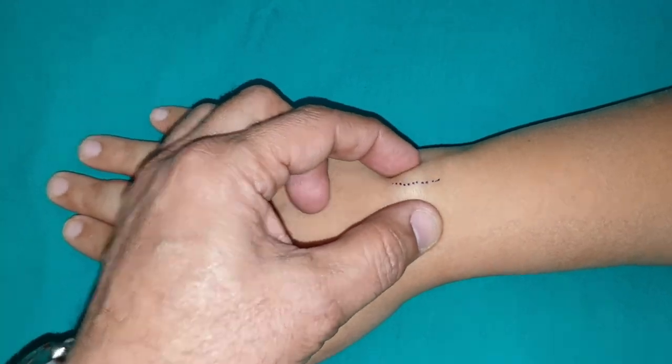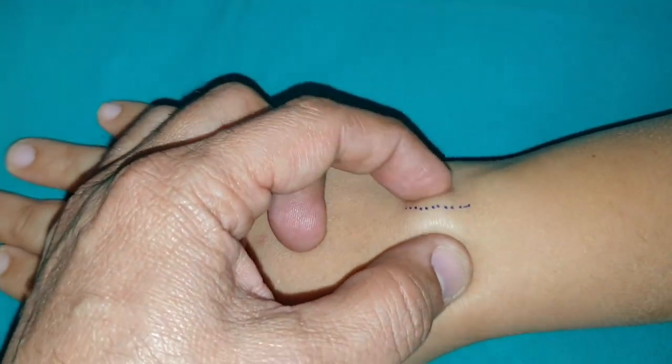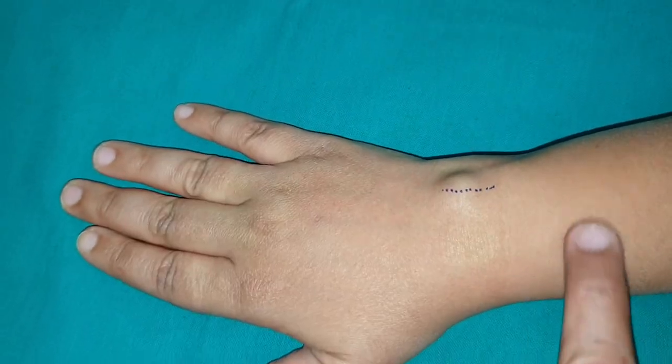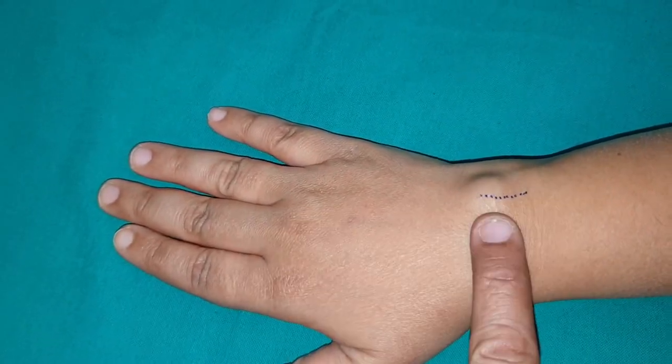The movement of ganglion is more appreciated in a direction perpendicular to the line of the tendons which are running across.